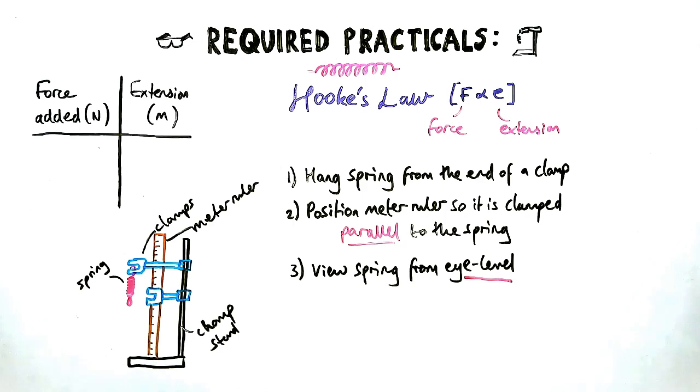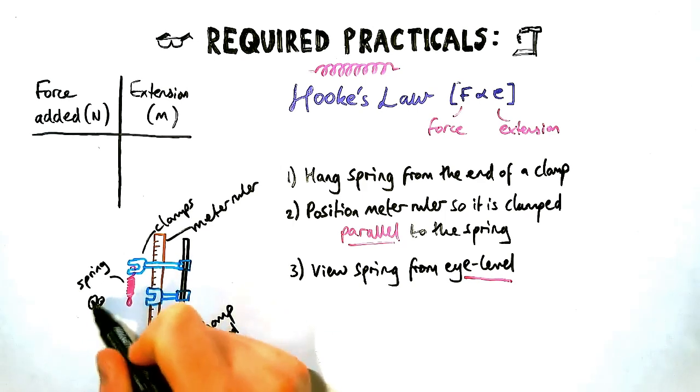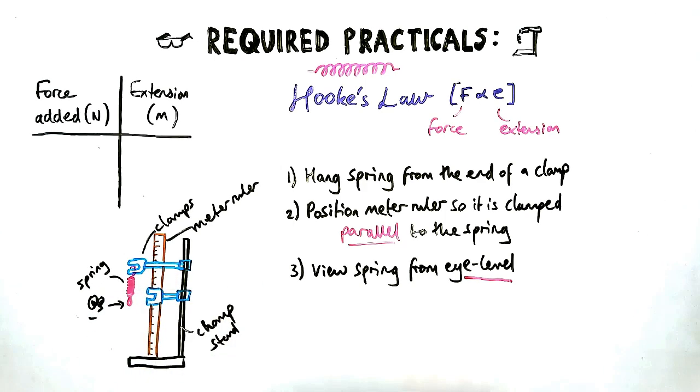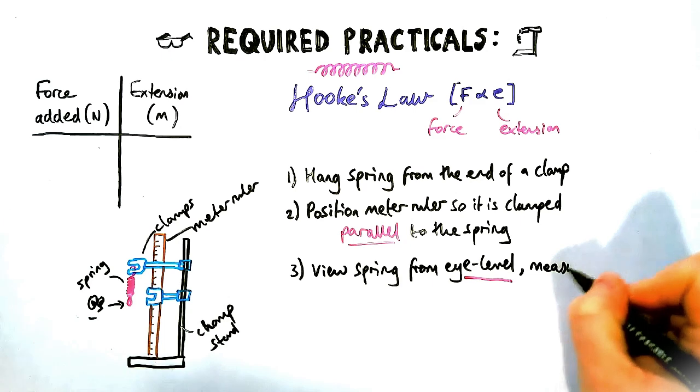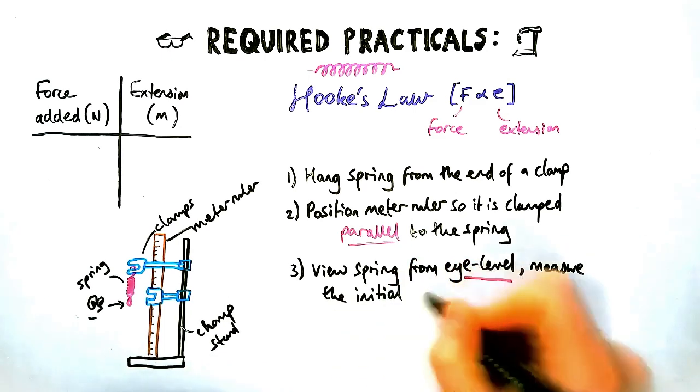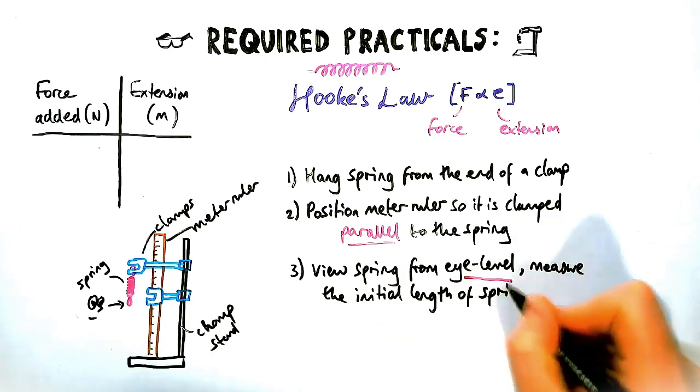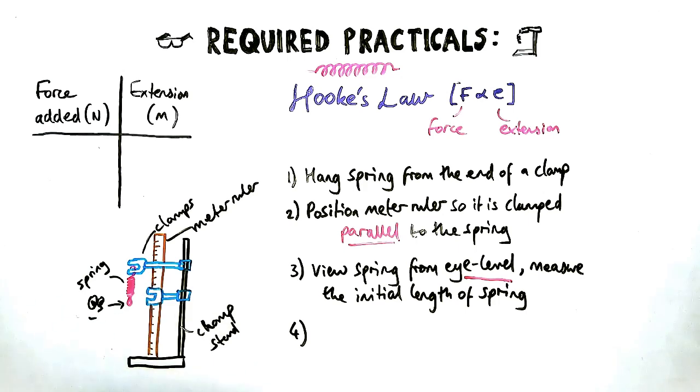Next, you're going to view the spring from eye level. What do you mean by that? Well, let's say you were doing the experiment, you'd crouch down so that your eyes were exactly level with the bottom of the spring. Then you'd use the ruler to measure the initial length of the spring.